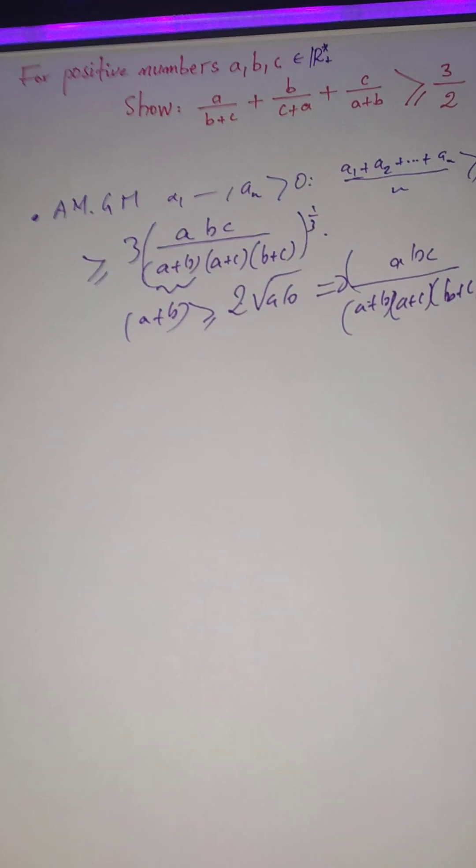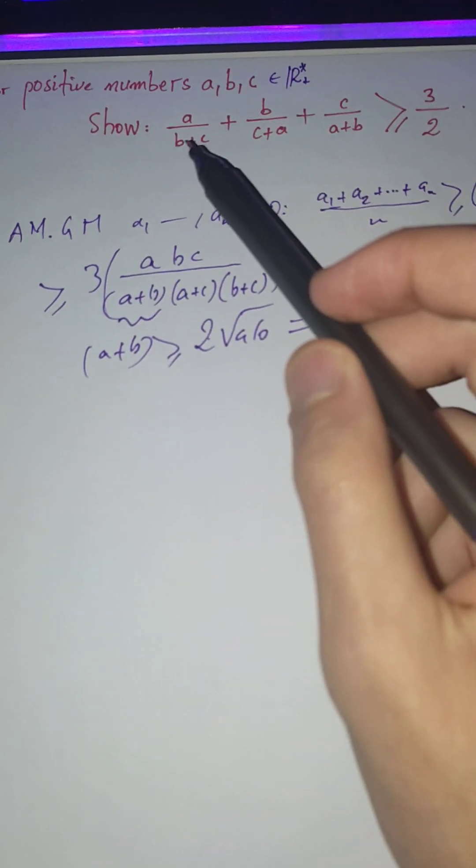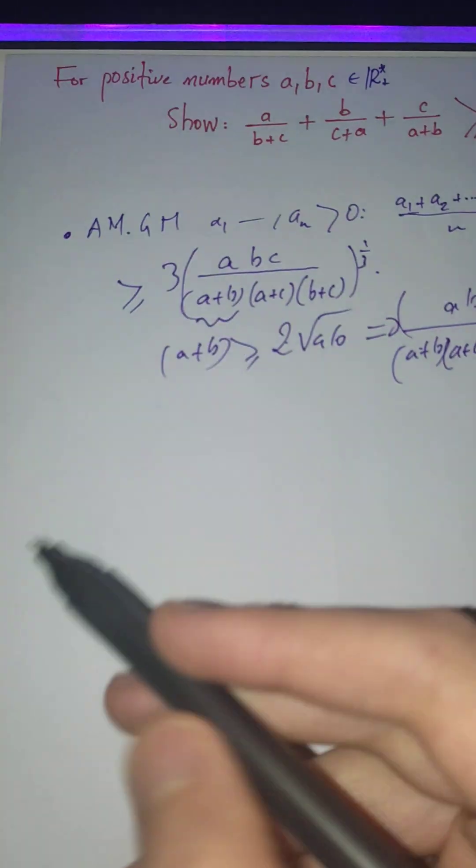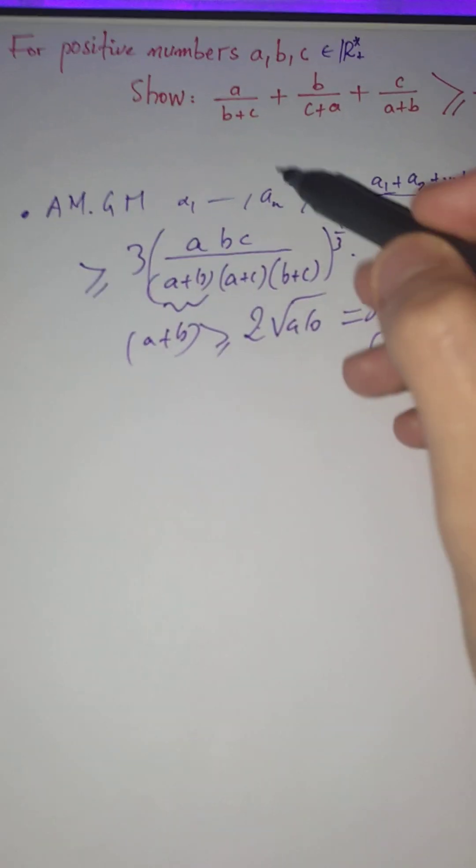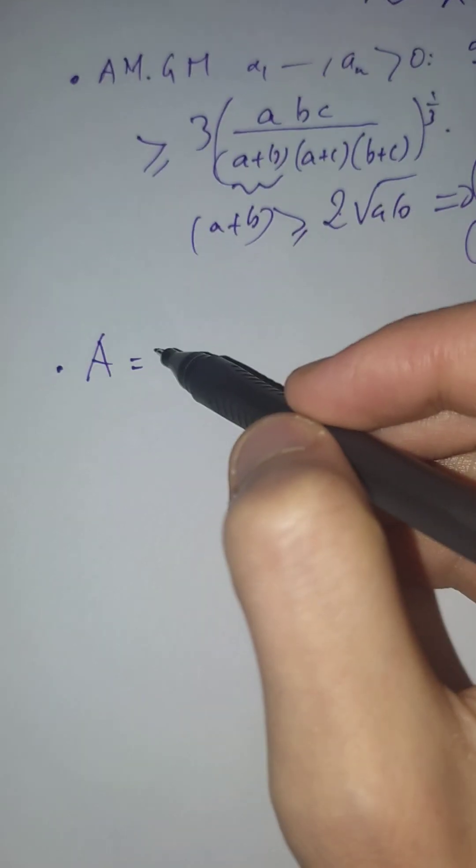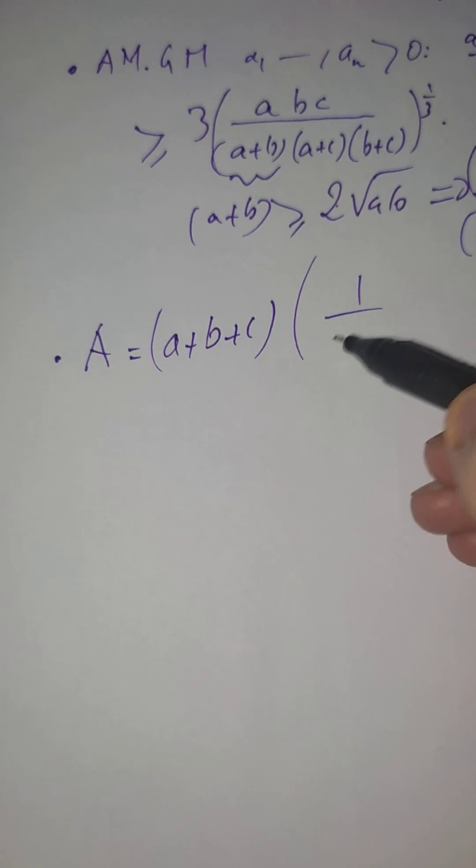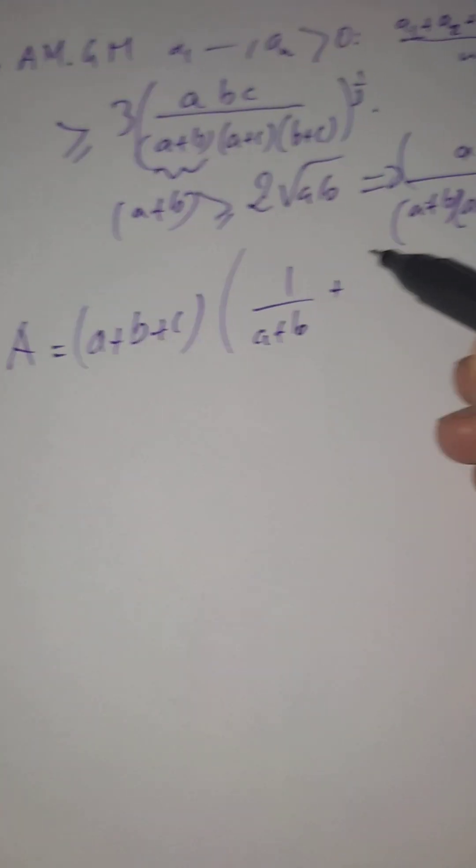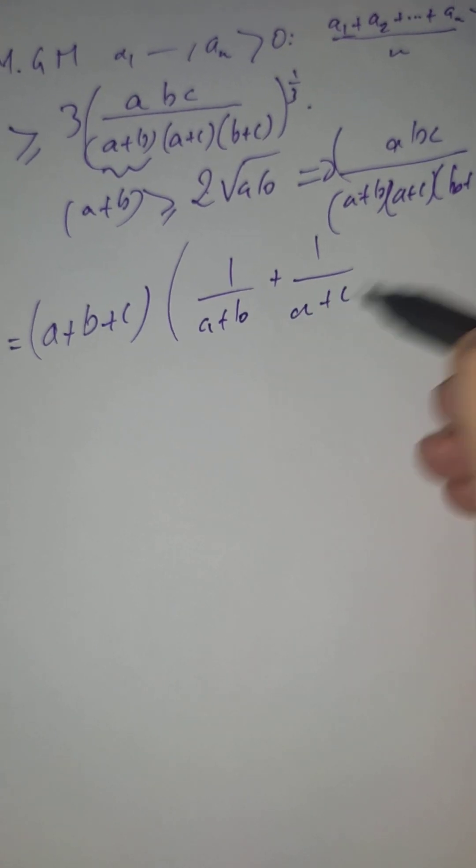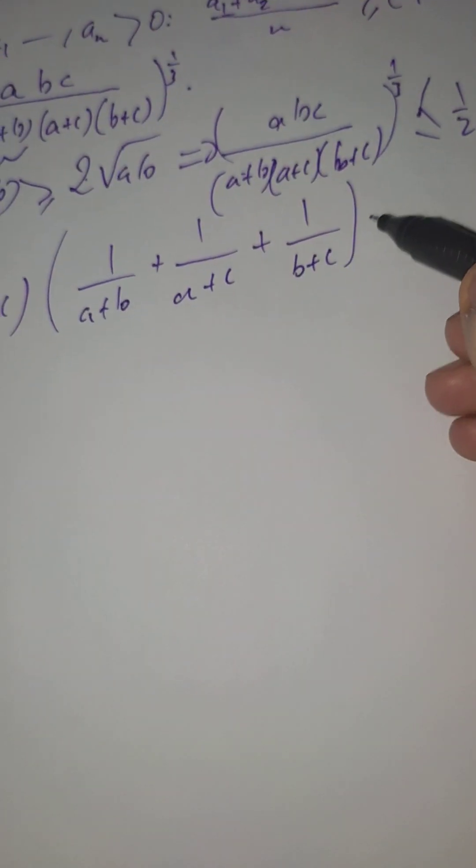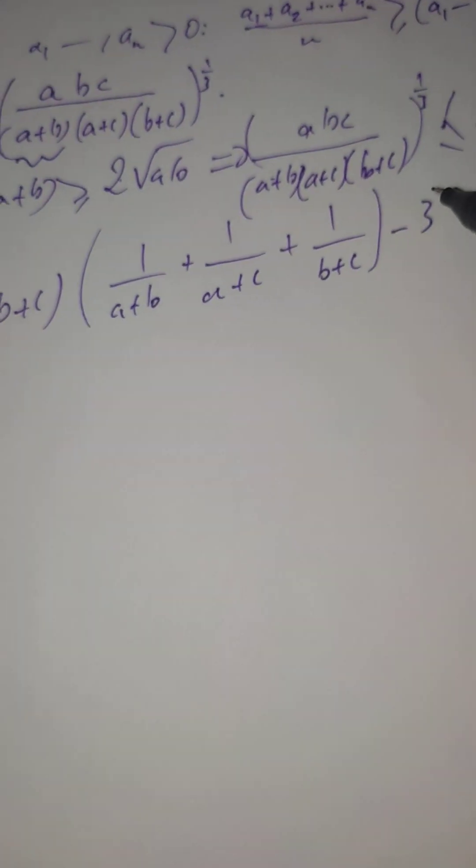How can we do this? One thing is to add, for this one, we need to add like (b plus c) over (b plus c). That's one, right? And we can get at the end, if we take this expression here, we have it actually equal (a plus b plus c) multiplied by (1 over a plus b plus 1 over a plus c plus 1 over b plus c) minus 3.